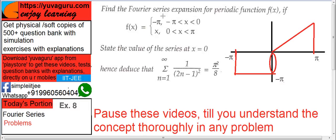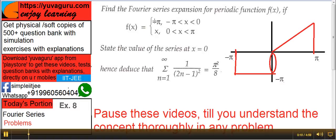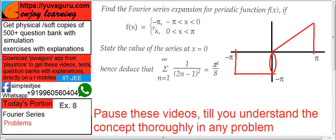Between minus pi to 0, this is constant, minus pi. And between 0 to pi, this is variable, x.